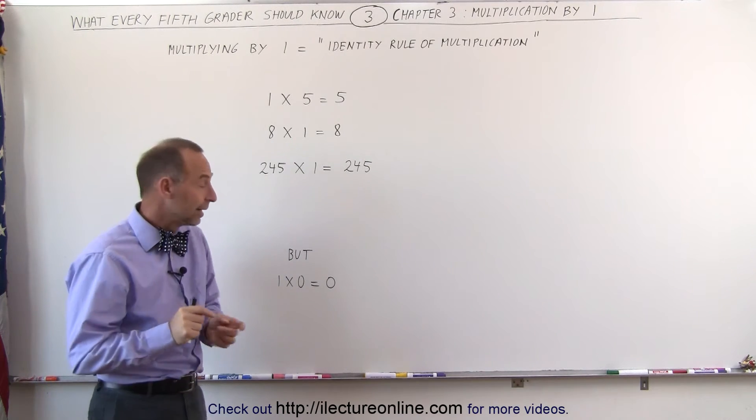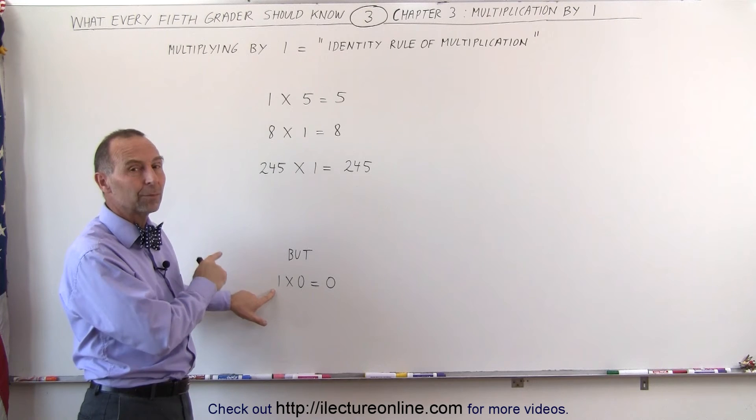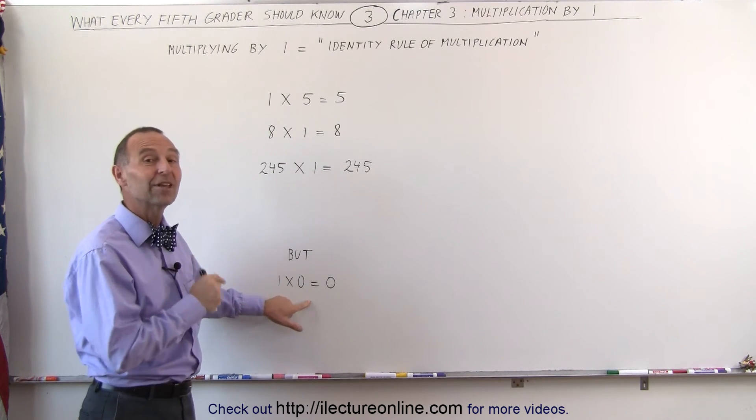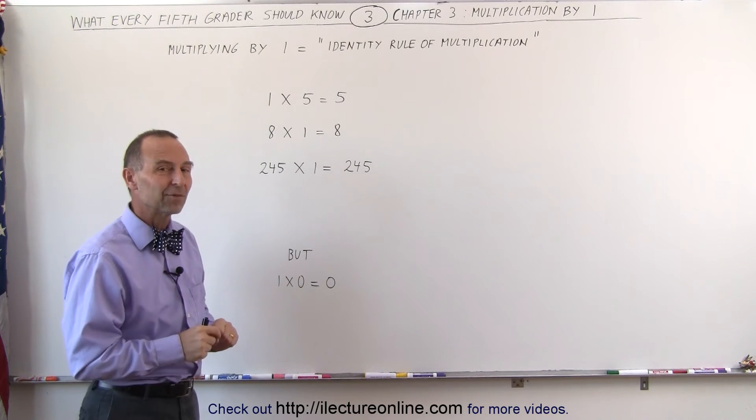But always remember that even if you have the number 1 there, if you multiply times 0, the rule of multiplication by 0 takes precedence, meaning you always get 0 no matter what you multiply times 0.